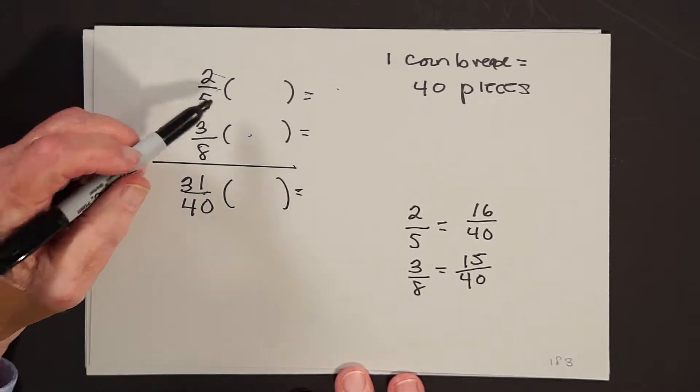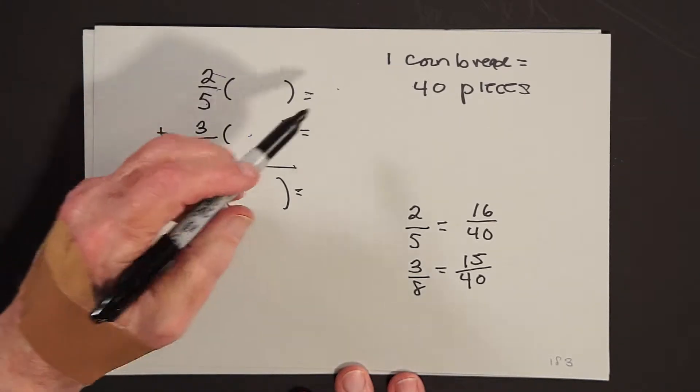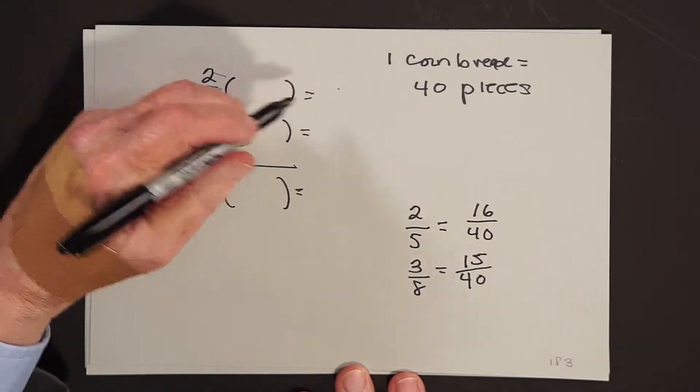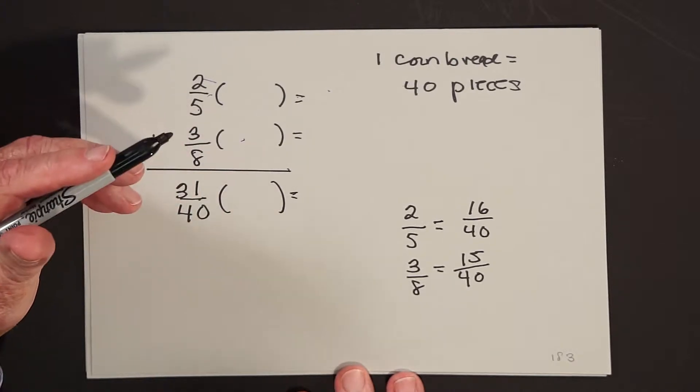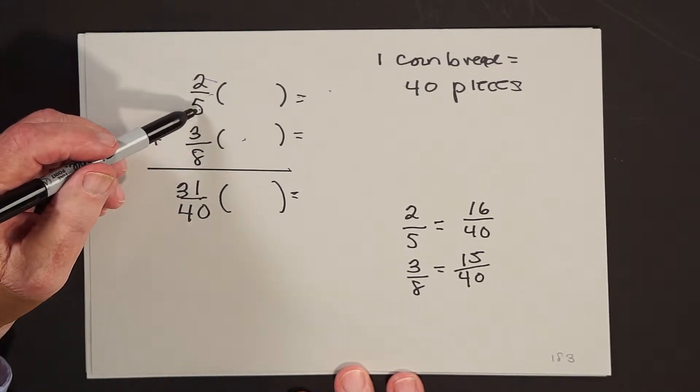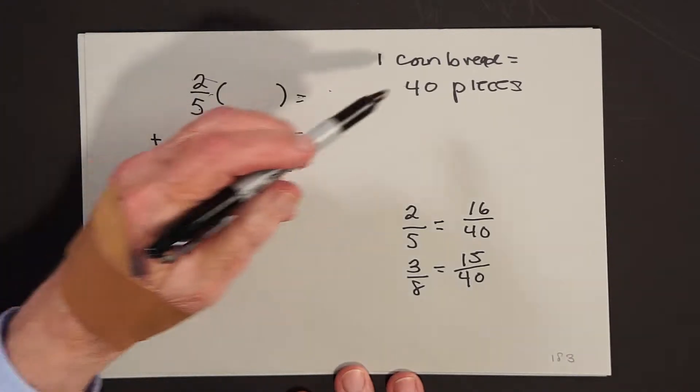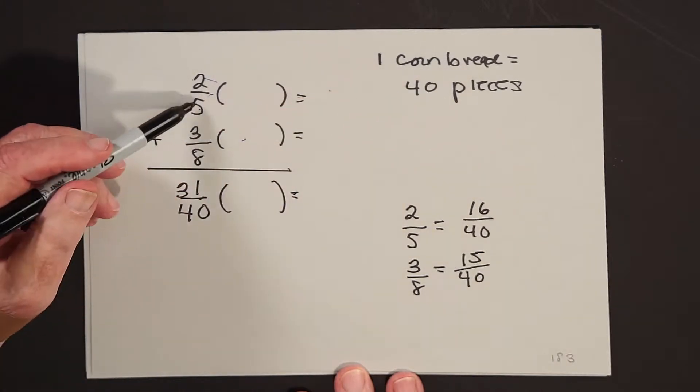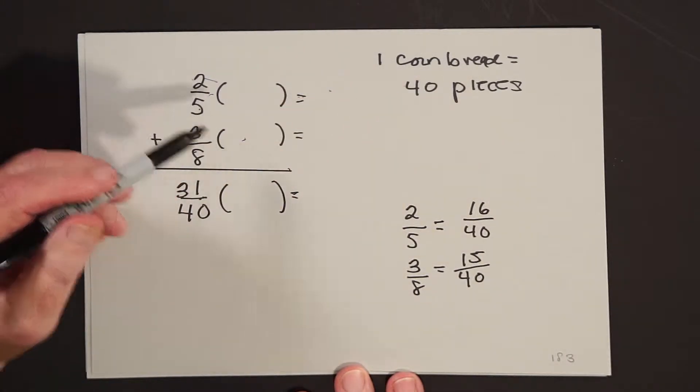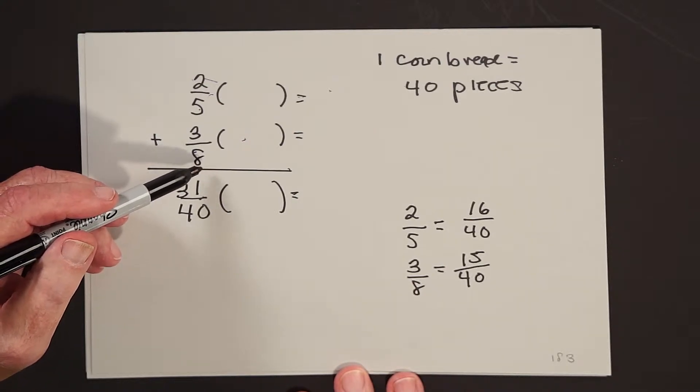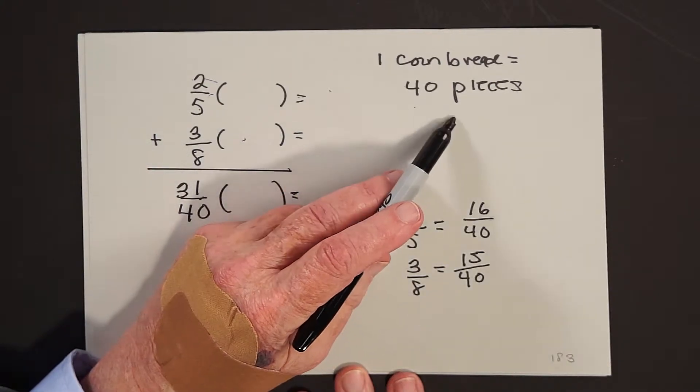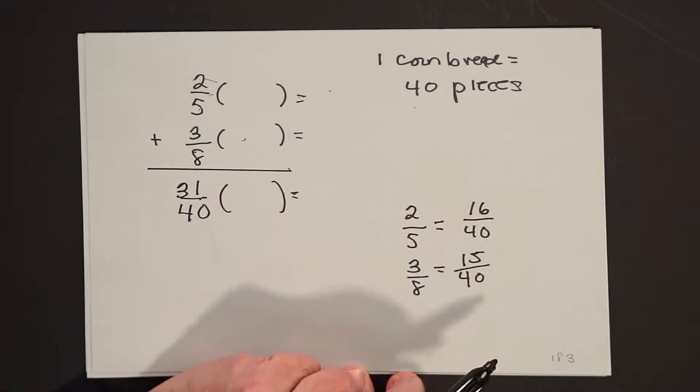What does two-fifths tell us? This tells us, remember, generically, the cornbread will always represent the unit. So I'm going to be taking two-fifths of the cornbread, which means I want the number of pieces in the cornbread to be divisible by five. I'm also taking three-eighths, so I want the number of pieces to be divisible by eight. So I'm going to assume that there are forty pieces to the cornbread.